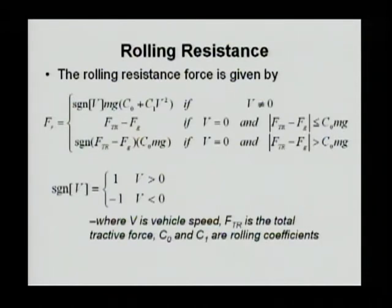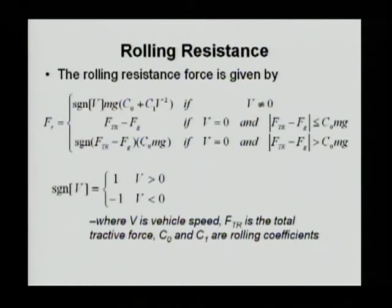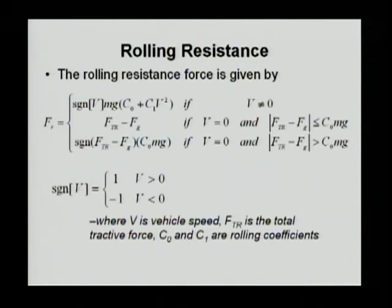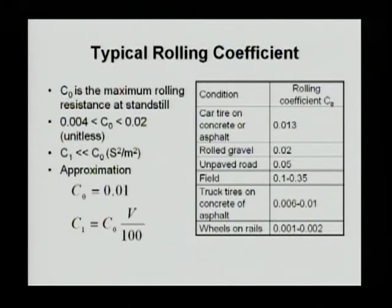Depending on the direction of the vehicle, rolling resistance could be negative based on the slope angle. If the vehicle is not moving yet, the rolling resistance is not Mg times C0, but rather the difference between the traction force and the gravitational force. Beyond that point, when speed is nonzero, you can easily calculate rolling resistance. C0 is dominant and C1 is quite small.